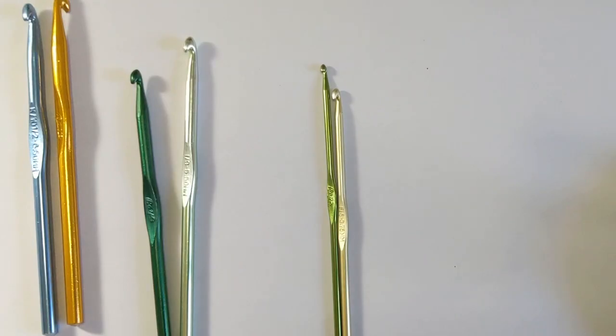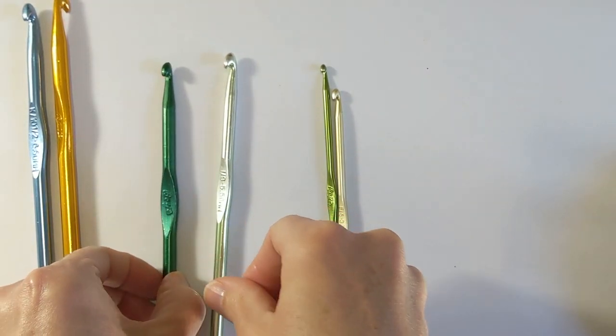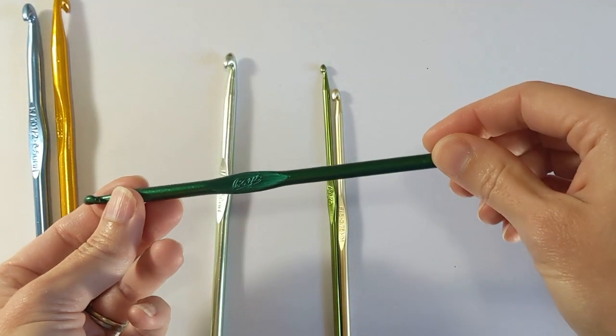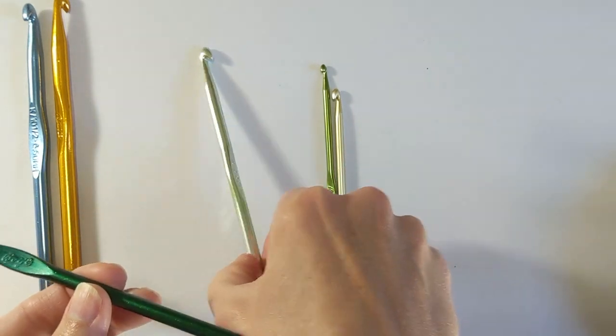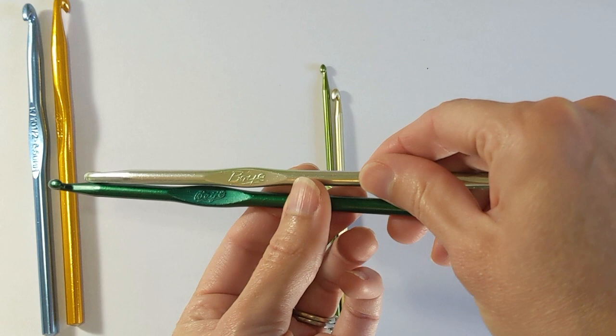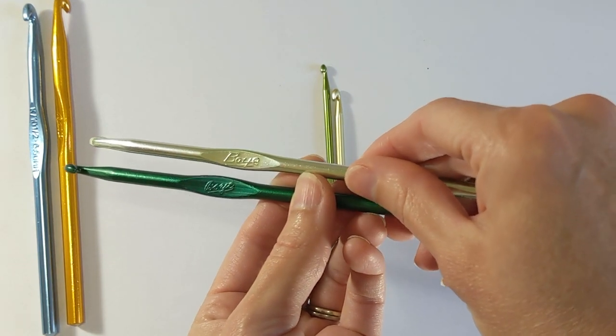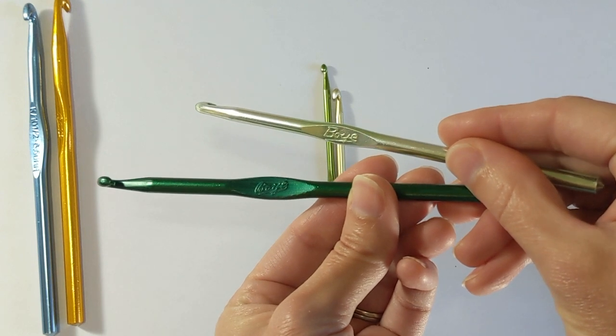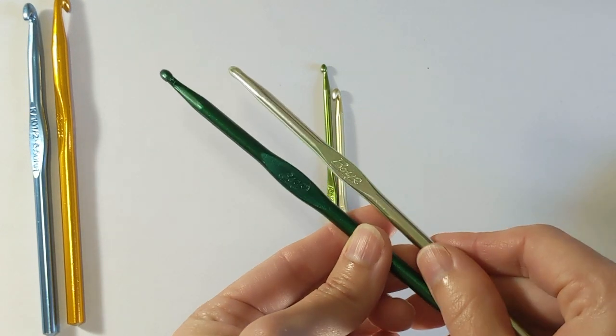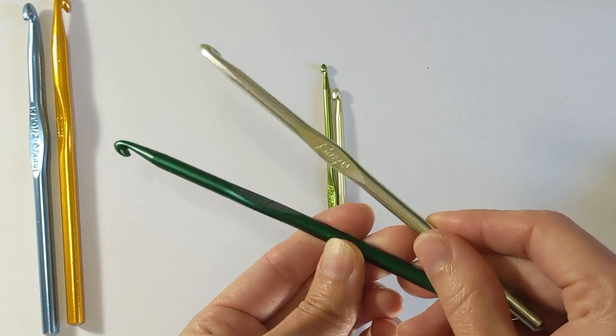Recently I acquired some new vintage Boye crochet hooks and the difference immediately that is noticeable is in the Boye logo. In the modern crochet hooks, the word Boye is more of a straight font versus in the vintage hook it is a cursive font. So that is a clue that the hook that you are using is indeed vintage.